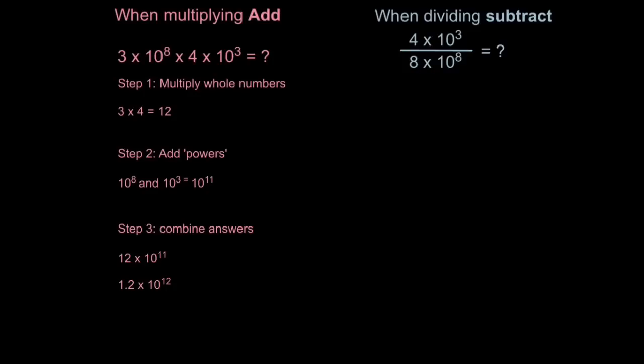So what about when we're dividing? Well, when we divide numbers, we have to subtract the standard form. So here we have 4 times 10 to the 3, divided by 8 times 10 to the 8. Step 1. Divide the whole numbers. So 4 divided by 8. Ignore this bit. So 4 divided by 8 is 0.5.